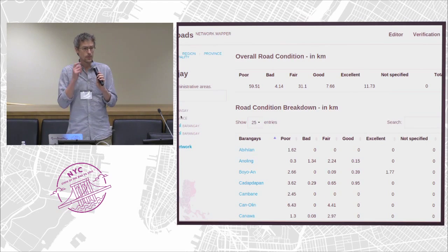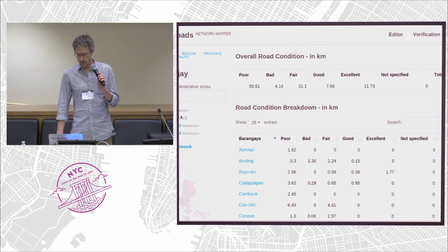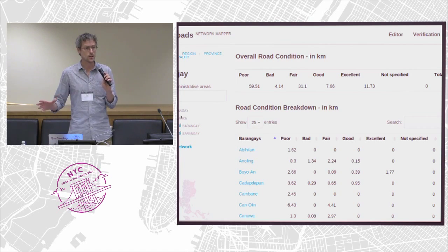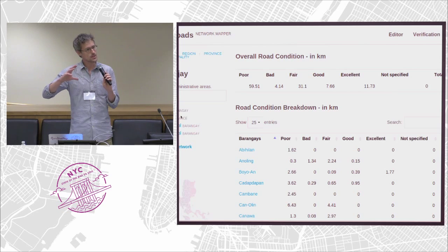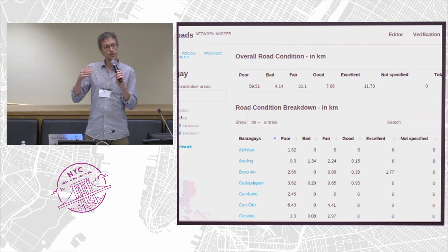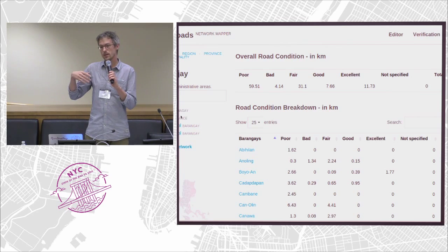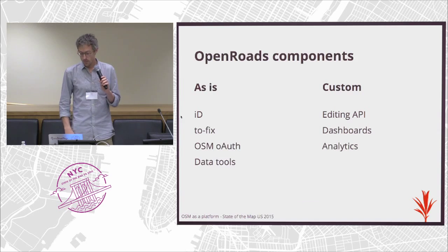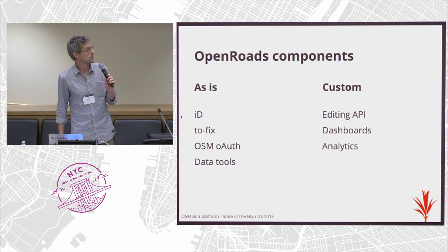We're also using ToFix, which is pretty much out of the box. One of the custom parts is the analytics functionality. Besides actually editing and managing the roads, they want to have analytics — road length, conditions of the roads — and they want to be able to do that by administrative area. So we built dashboards which allow them to check road conditions by municipality. That's the custom part, while iD and ToFix are pretty much as-is.